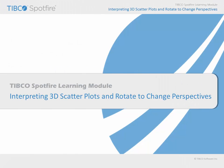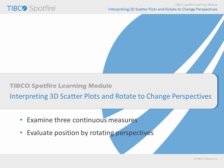In this learning module, we will consider the ways in which SpotFire 3D scatter plots may be used to visualize data, including the ability to examine the relationships between three continuous variables and rotate the view in an effort to evaluate the position of markers within three-dimensional space.